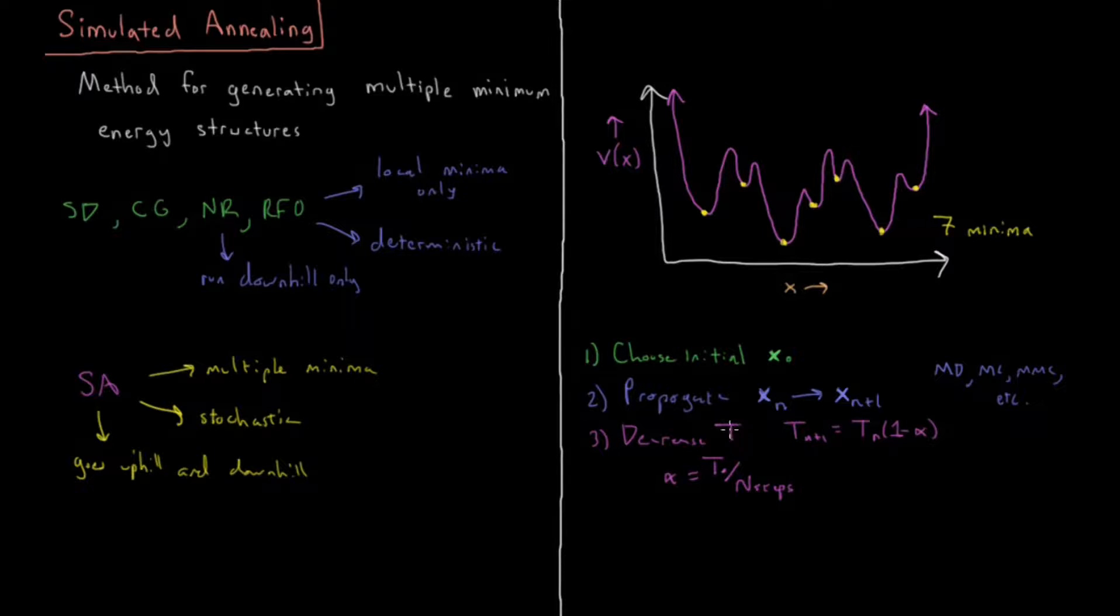You could choose this to decay with some other kind of function. Maybe it's exponentially decays, maybe it, who knows any kind of decay you want, but the most simple way would just be to have it linearly go from the initial T to the final T, decreasing slowly at each step.